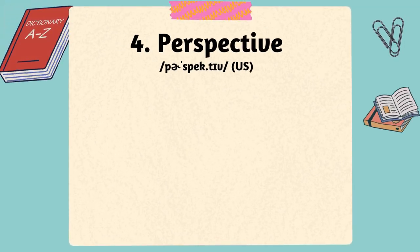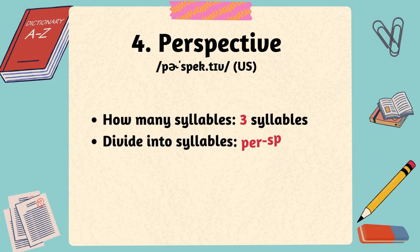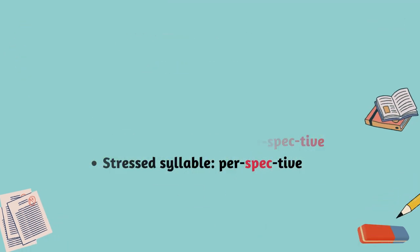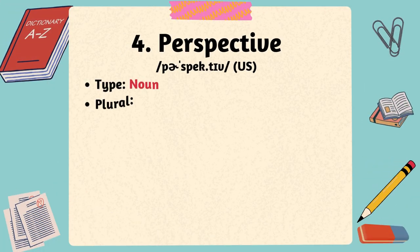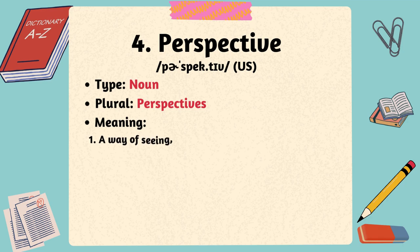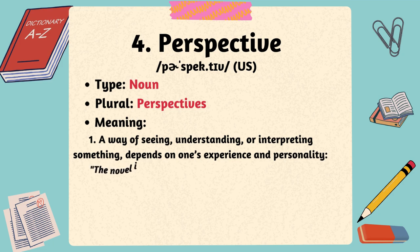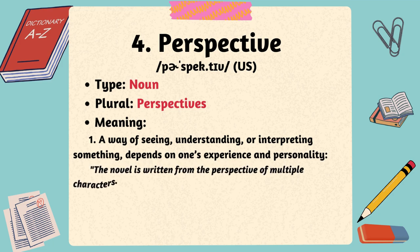The fourth word is perspective. The word perspective has three syllables with the stress on the second syllable. Perspective is a noun in English and it refers to a way of seeing, understanding, or interpreting something, which depends on one's experience and personality. It can also indicate the spatial relationship between objects in a drawing or painting, creating an illusion of depth.